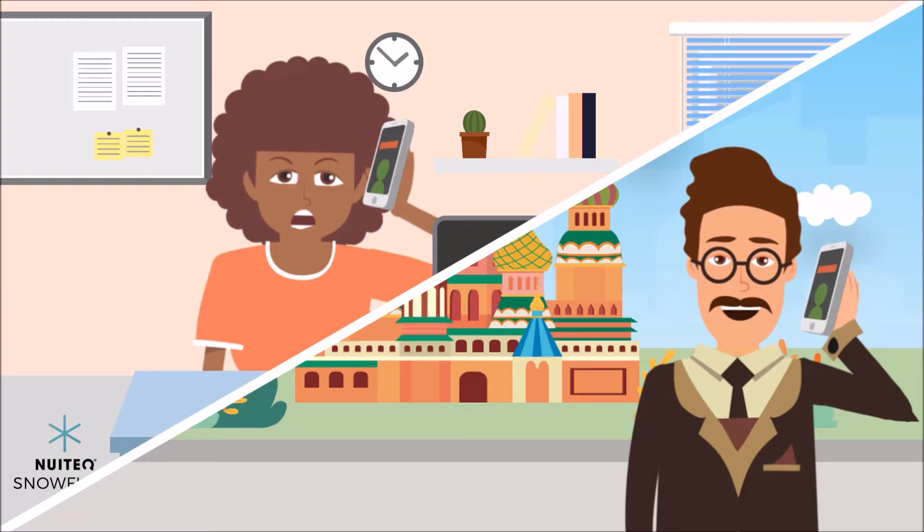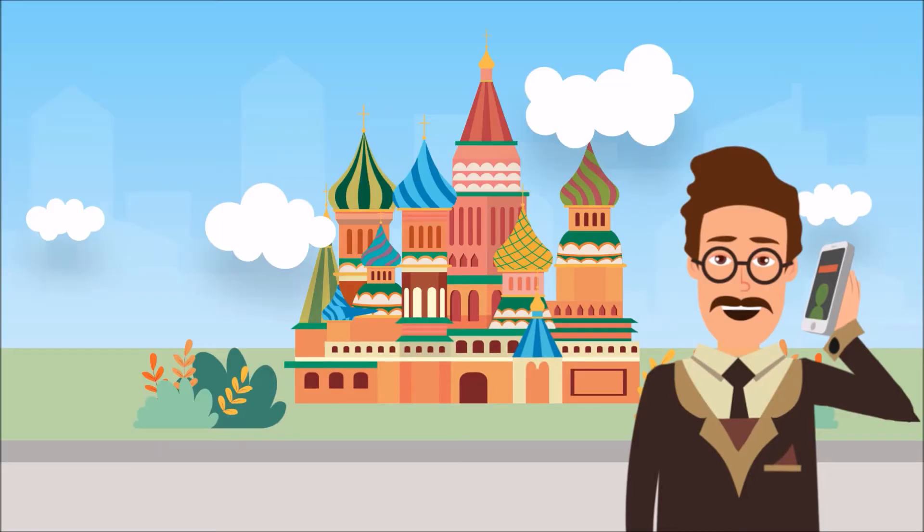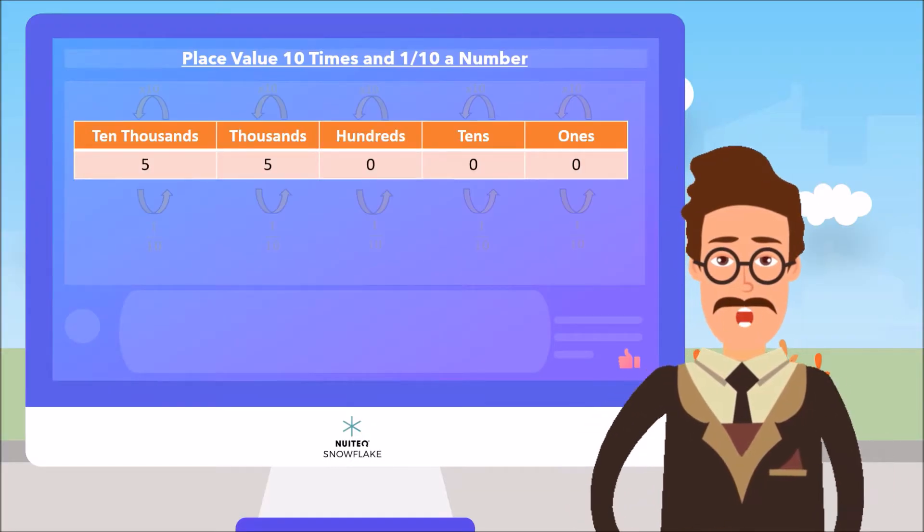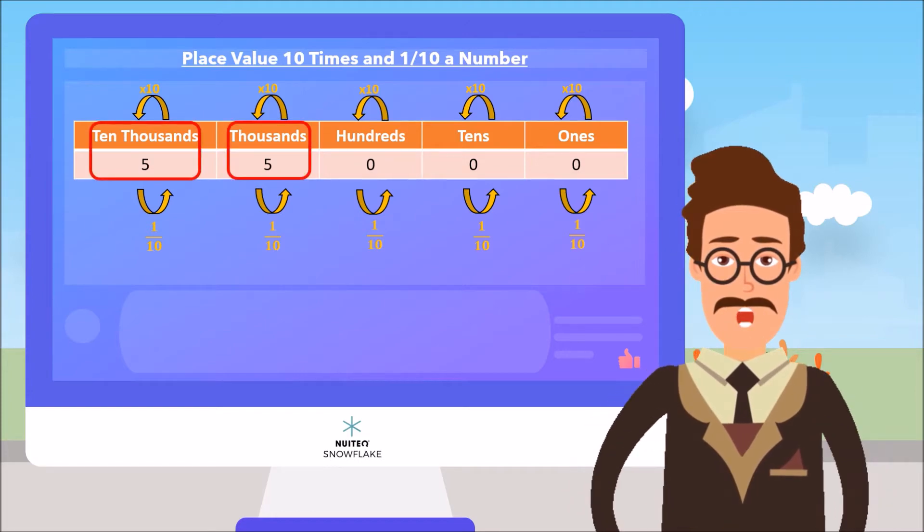Well, I may start with place value. As you move to the left in this place value chart, the value of each place is 10 times the value of the place before it. So, in the number 55,000 the digit in the 10 thousands place is 10 times the value of the digit in the thousands place,